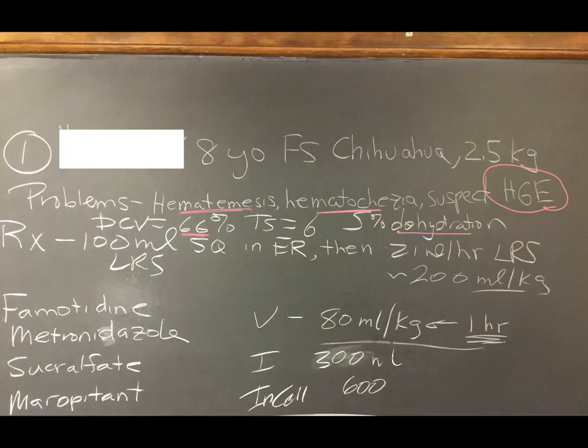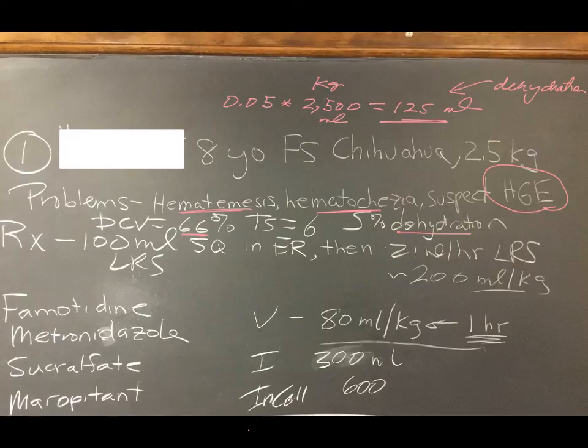So let's take a look at the therapy. I'm actually writing it down, what it is they did. They gave 100 mils sub-Q in the emergency clinic, and then 21 mils per hour continuous IV fluids of lactated ringers. So if they said the dog was 5% dehydrated, based upon that, you'd expect that you might then have roughly 125 mils of dehydration. You usually convert kilograms to liters or to milligrams, or to grams. So you had 125 mils is the dehydration part, and so they tried to rehydrate the animal right away by giving sub-Q fluids.